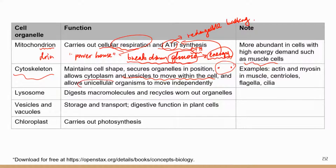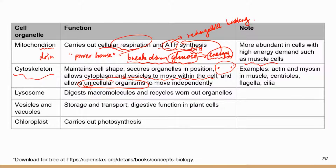The cytoskeleton also aids the movement of the whole cell. Some unicellular organisms are made of just one cell — for example, amoeba is a unicellular organism. For amoeba to move, it requires the cytoskeleton. The cytoskeleton consists of different kinds of protein fibers, and when those proteins contract, it allows the cell or its components to move.